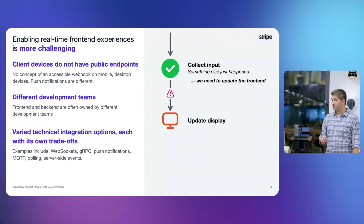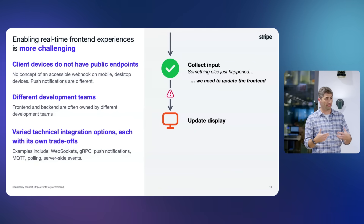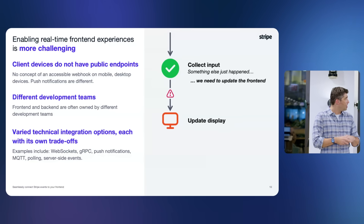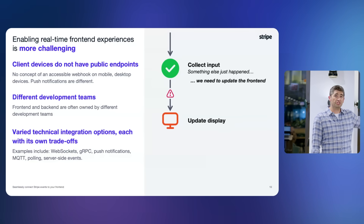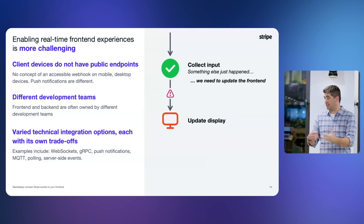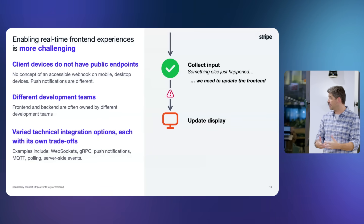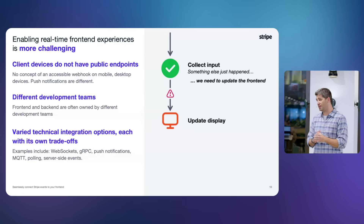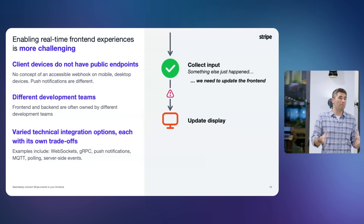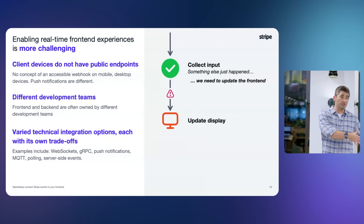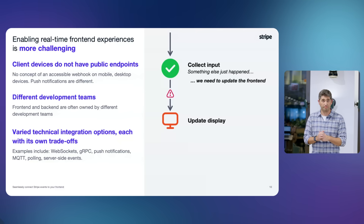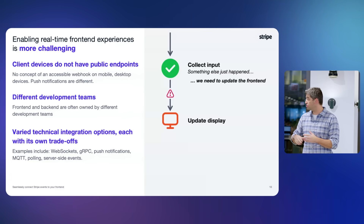Mobile devices and most front-end interfaces don't have a way to consume a webhook or publish an endpoint to receive them. This becomes more challenging because we use different technology to keep the user interface performant and connected. Often there are different development teams involved — back-end teams and front-end teams — who may meet at an API definition but are generally working separately and making different choices.